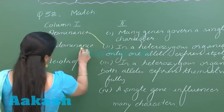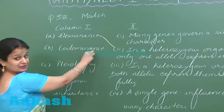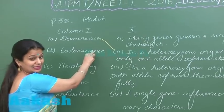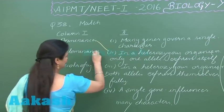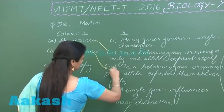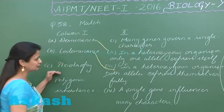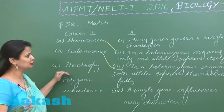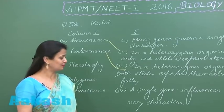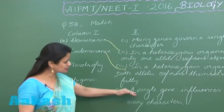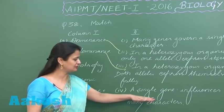When we talk about co-dominance, both the alleles in the heterozygous condition show expression, so this goes with option three. Now coming to pleiotropy — in the case of pleiotropy, a single gene influences several characters.